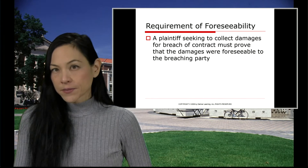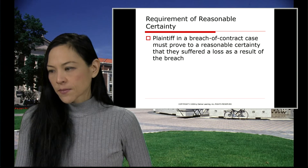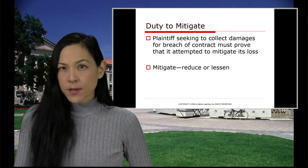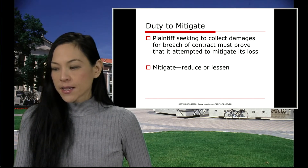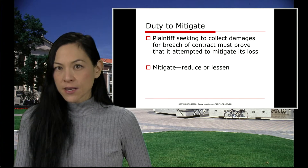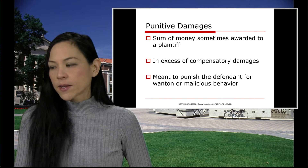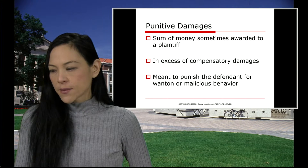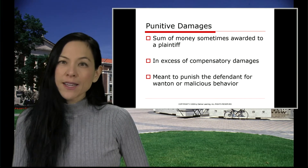The plaintiff seeking to collect damages — whether specific performance or money lost — must have actually attempted to mitigate, meaning reduce or lessen what they're requesting in court. Punitive damages are the sum of money sometimes awarded to a plaintiff in excess of compensatory damages, meant to punish the defendant for wanton or malicious behavior — very bad, evil behavior.